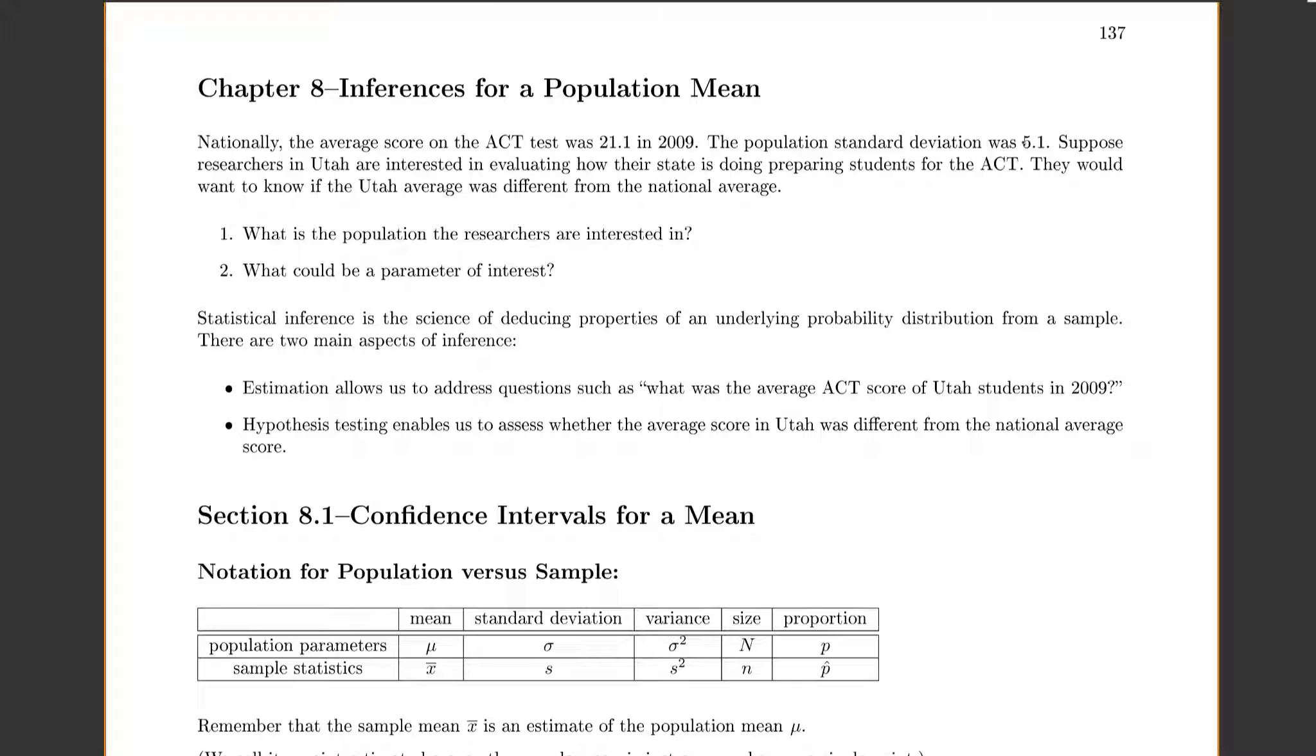So what would be the population that the researchers would be interested in? These researchers said they're interested in people from Utah, so we'd say all students in Utah. And what would be the parameter of interest? It would be the mean ACT score for all those students in Utah.